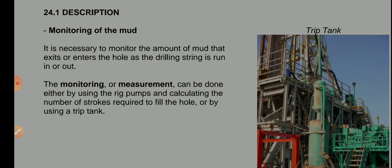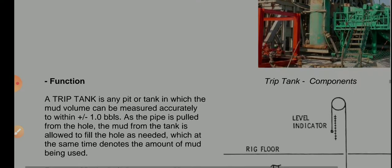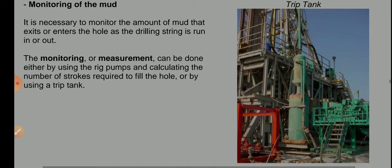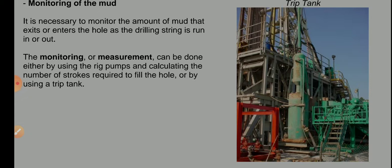The main purpose of the trip tank is to know, while tripping in and tripping out, the loss or gain. Loss is when the mud sent into the wellbore does not return in the actual amount — some mud may go into the formation and not return. If the reverse happens — that means an excess amount of mud is coming outside — then we call it a gain.